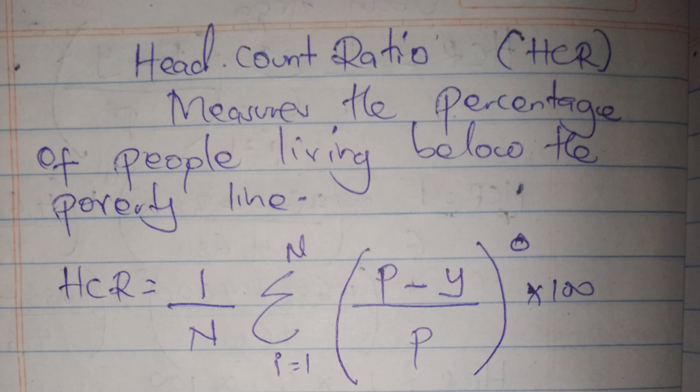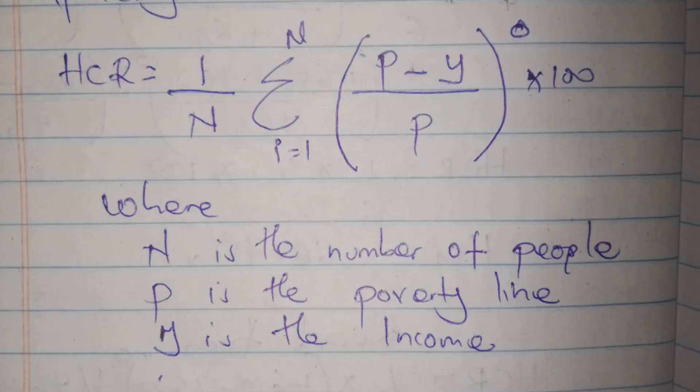In the formula, n is the number of individuals, p is the poverty line, and y is the individual income — times 100. We are measuring the number of people that live below the poverty line, so any individual that earns equal to or above the poverty line is not considered when calculating the head count ratio.